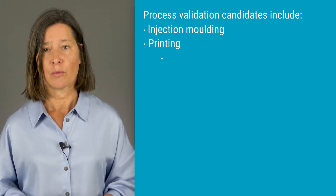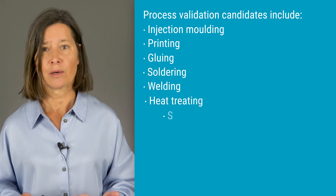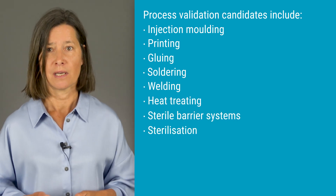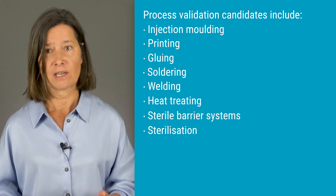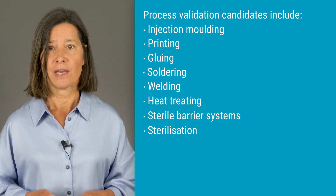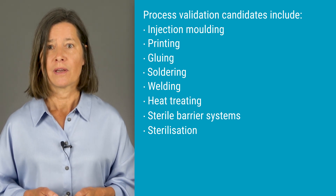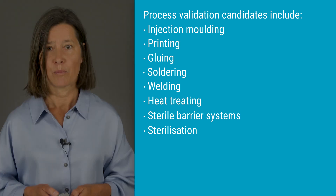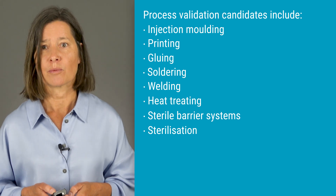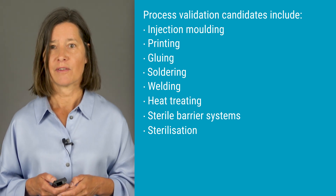Here is a number of processes that should be considered as process validation candidates in production — they all share that it is not possible to fully verify the output. They include injection molding, printing, gluing, soldering and welding, heat treatment, sterile barrier systems, and sterilization. If you have any of these in your production and they are not validated, it's a good idea to validate them now. There may also be other manufacturing processes that may need to be validated.